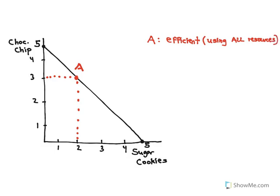Because remember the most batches I can make in total is five and at combination A that's exactly what I'm doing. I'm making three chocolate chip plus two sugar cookie so I would make five batches in total. So any point on the PPC is considered efficient.